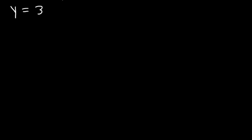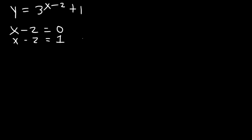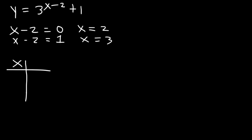Let's try this example: 3^(x-2) + 1. What we're going to do is set x minus two equal to zero and one, then solve. When x minus two equals zero, x is two. When x minus two equals one, x is three. So those are the two x values we're going to use.